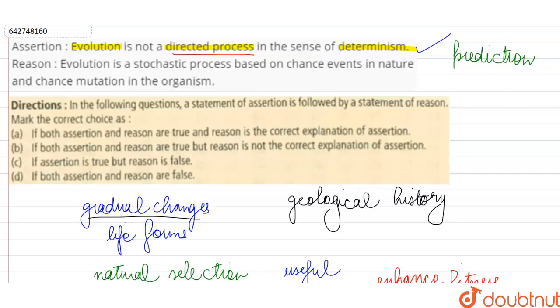The reason they are giving us evolution is a stochastic process based on chance events in nature as we have just mentioned or chance mutation in the organism. So yes, such mutations or changes in the DNA, changes at genetic level can also be seen because of various physical, chemical or biological factors.